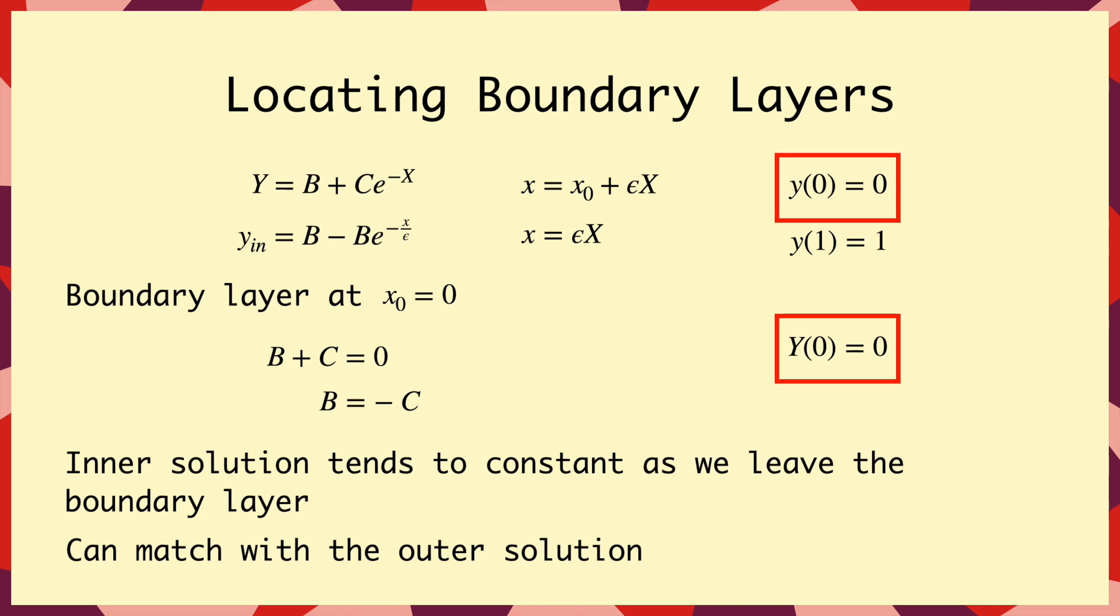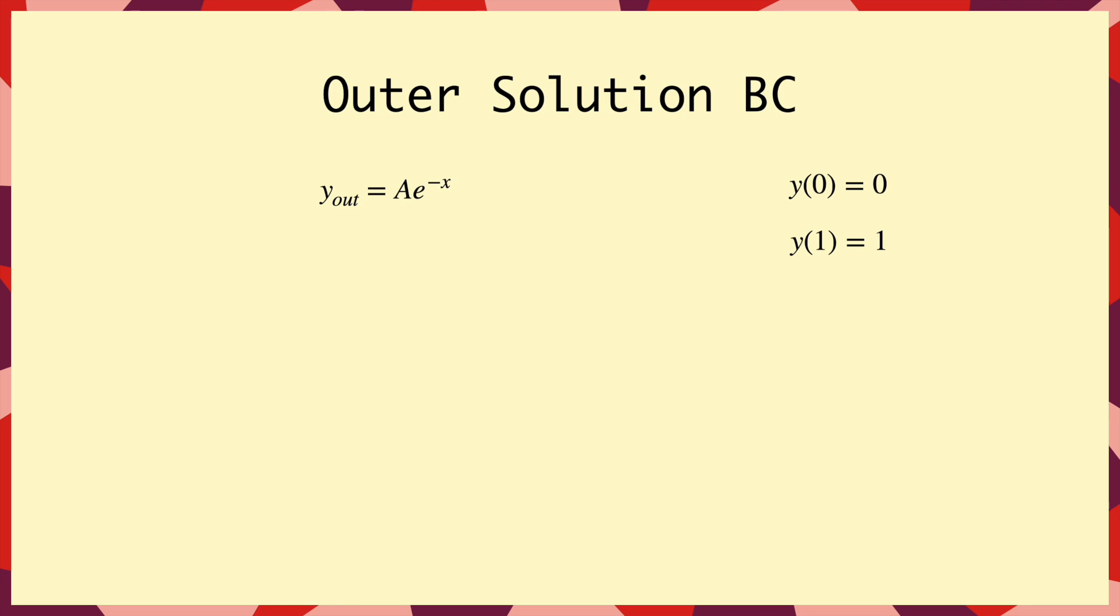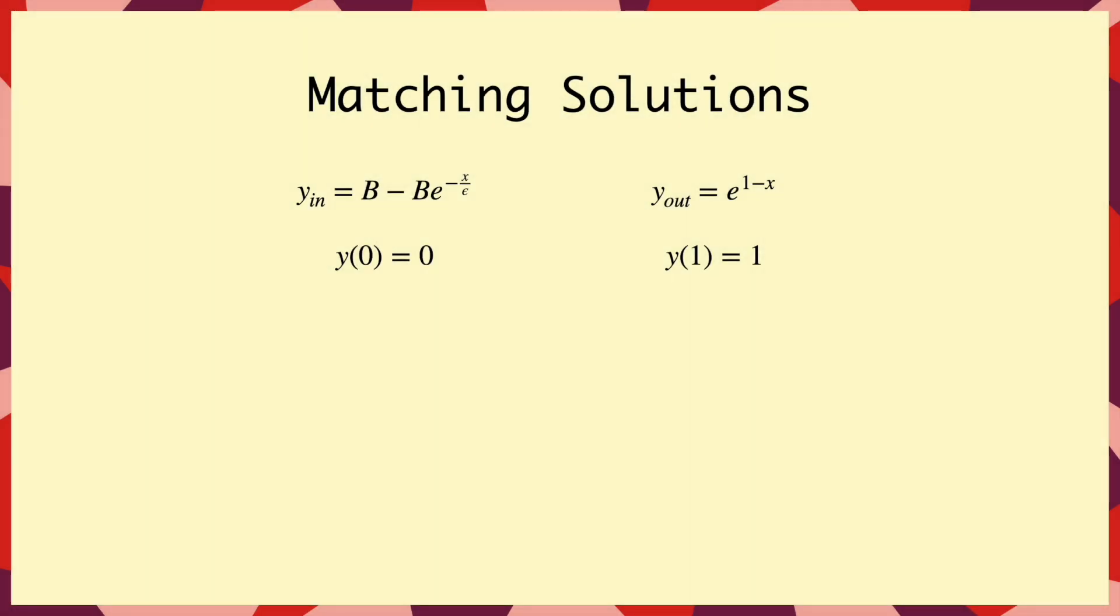But before we can join our two solutions together, we need to figure out the constant in the outer solution. And now that we know where the boundary layer is, our outer solution is going to meet the boundary condition on the opposite side of the domain, so at x = 1. And that tells us that A must be equal to e. So we can plug that in too, and we've got our outer solution. And the only thing that's left to do is to join our two solutions together.